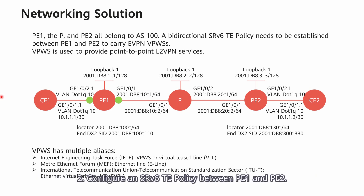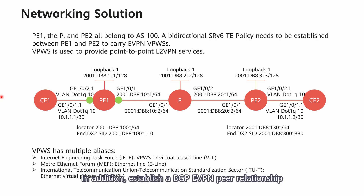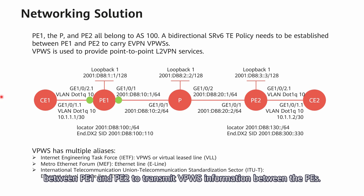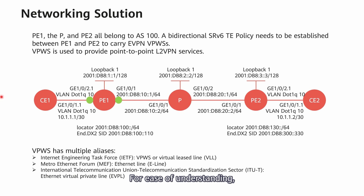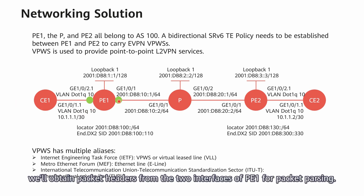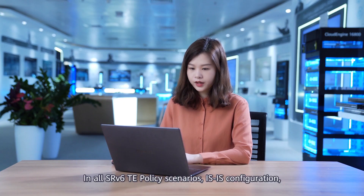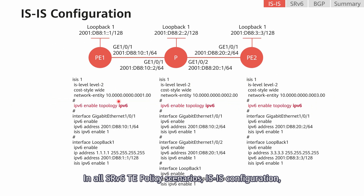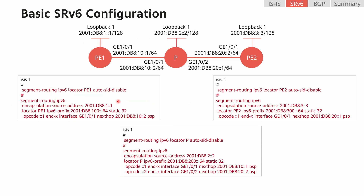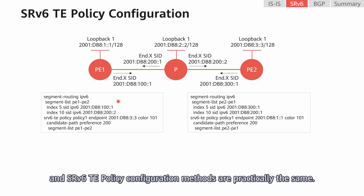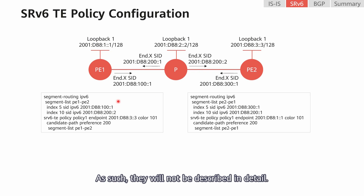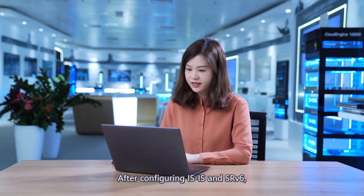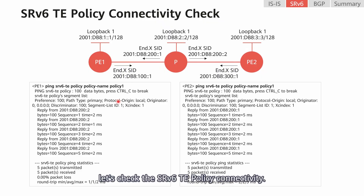Second, configure an SRV6TE policy between P1 and P2. Third, configure CE access on P1 and P2. In addition, establish a BGP-EVPN peer relationship between P1 and P2 to transmit VPWS information. For ease of understanding, we will obtain packet headers from the two interfaces of P1 for packet parsing. In all SRV6TE policy scenarios, IS-IS configuration, basic SRV6 configuration, and SRV6TE policy configuration methods are practically the same, so they will not be described in detail. After configuring IS-IS and SRV6, let's check the SRV6TE policy connectivity. If the connectivity is normal, we can then configure BGP.